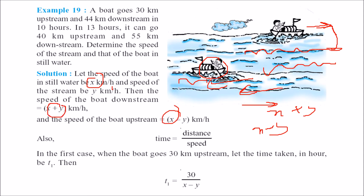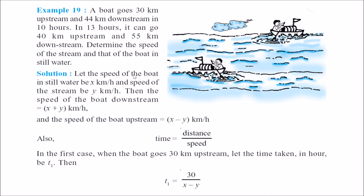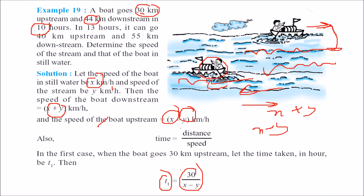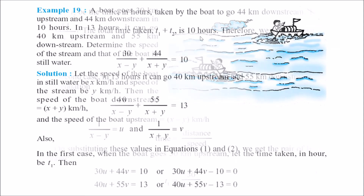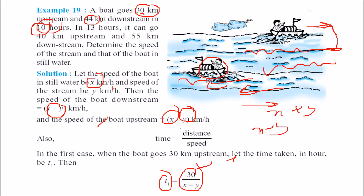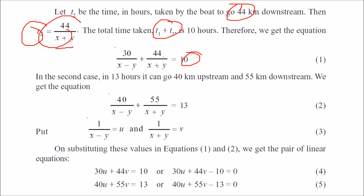The first condition: 30 km upstream and 44 km downstream takes 10 hours, so 30/(x minus y) plus 44/(x plus y) equals 10. The second condition: 40 km upstream and 55 km downstream takes 30 hours, so 40/(x minus y) plus 55/(x plus y) equals 30. Let u equal 1/(x minus y) and v equal 1/(x plus y). Then: 30u plus 44v equals 10, and 40u plus 55v equals 30.